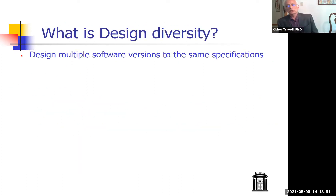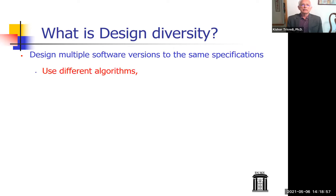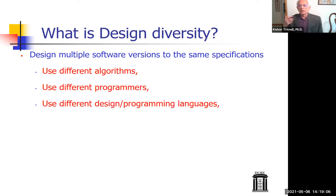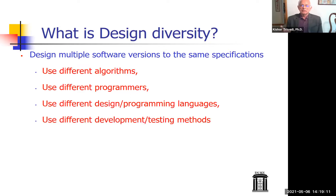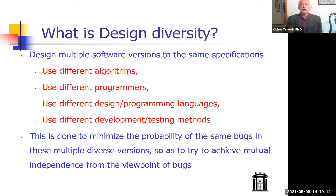The idea of design diversity was to design multiple versions of software to the same specifications, using different algorithms, different programmers, different design or programming languages, and different development and testing methods, in order to minimize the probability of the same bugs appearing in the multiple diverse versions, thus increasing their mutual independence with respect to bugs. This idea was very popular and well documented in papers and books.